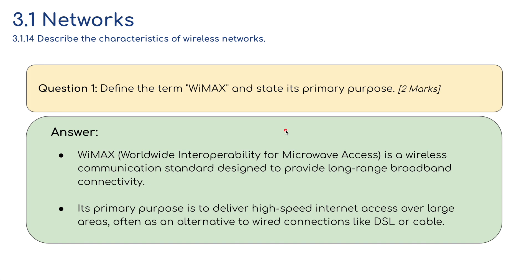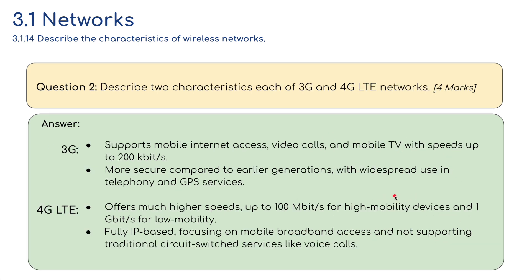Answer to question one: WiMAX — Worldwide Interoperability for Microwave Access — is a wireless communication standard designed to provide long-range broadband connectivity. Its primary purpose is to deliver high-speed internet access over large areas, often as an alternative to wired connections like DSL or cable.